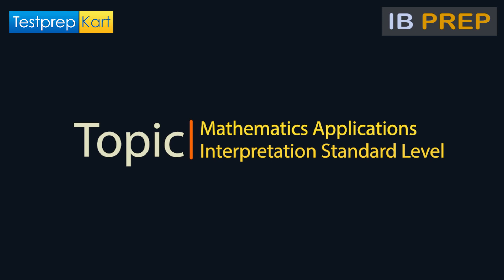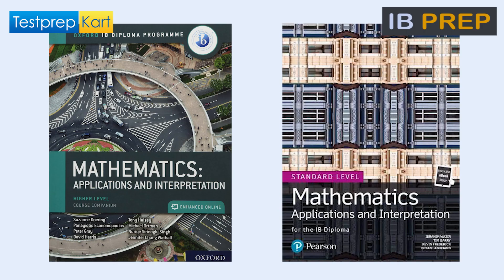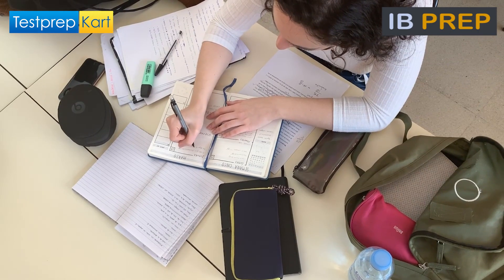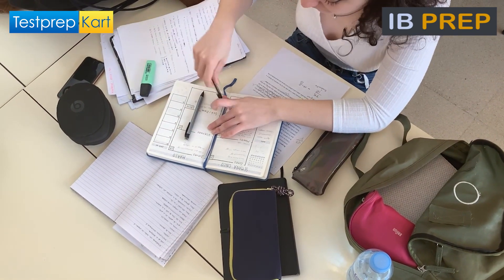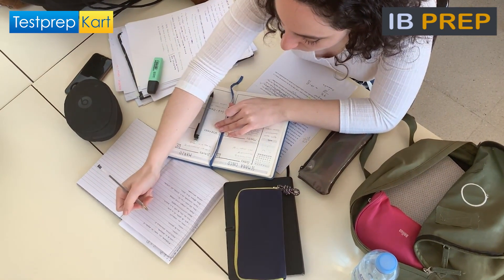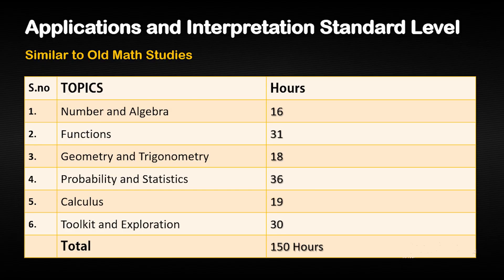Mathematics Applications and Interpretation is similar to the old Math Studies. This course should be taken by students who are not strong at math and do not plan to study any mathematics-based course after high school. Like the old Math Studies, it is for 150 hours. Topics covered in Math AI SL: Number and Algebra for 16 hours, Functions for 31 hours, Geometry and Trigonometry for 18 hours, Probability and Statistics 36 hours, Calculus for 19 hours, and Toolkit and Exploration for 30 hours.